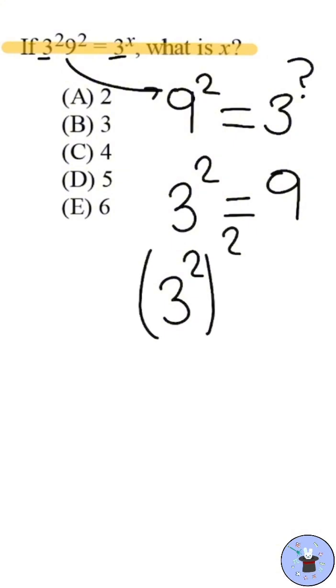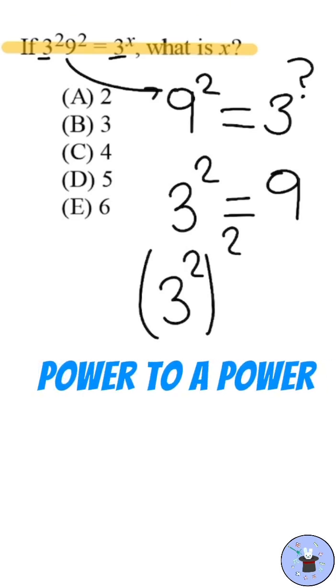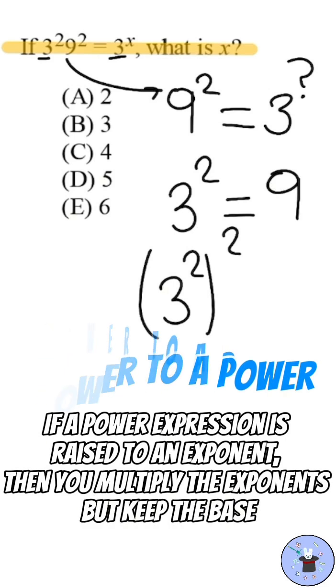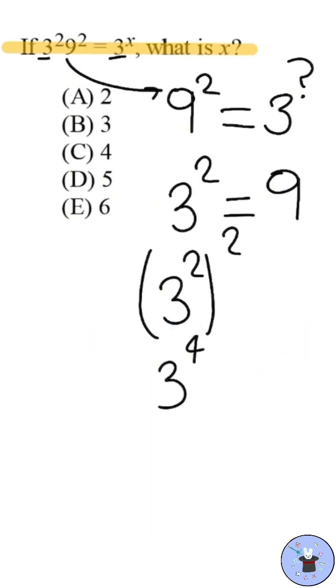In order to solve this problem, you must know your power properties. We're going to use the power to a power property, where if a power expression is raised to an exponent, then you multiply the exponents but keep the base. We'll multiply 2 times 2 to get 4, then we get 3 raised to 4.